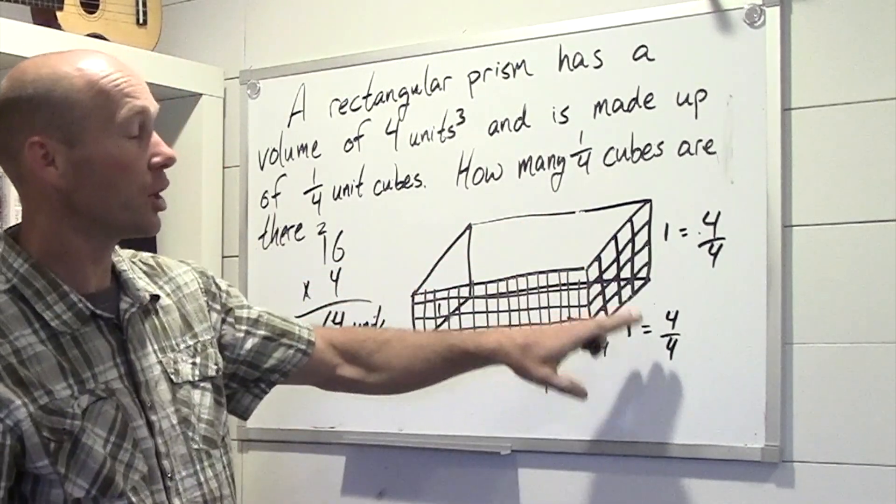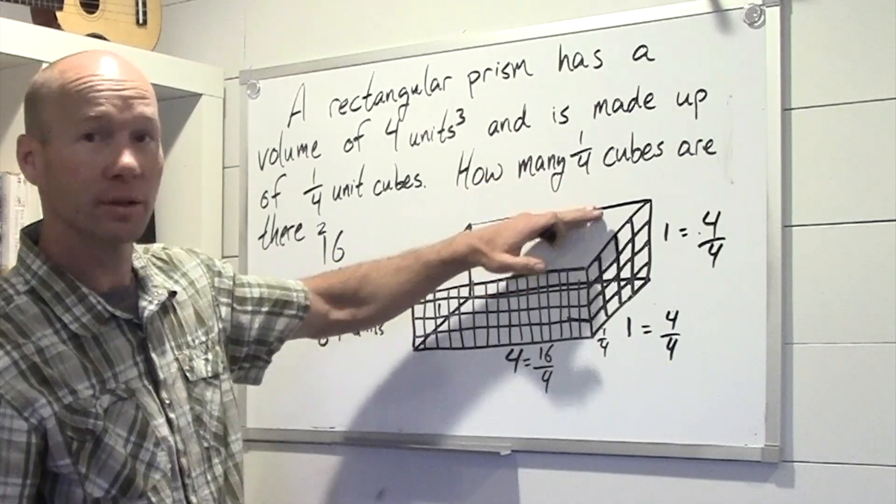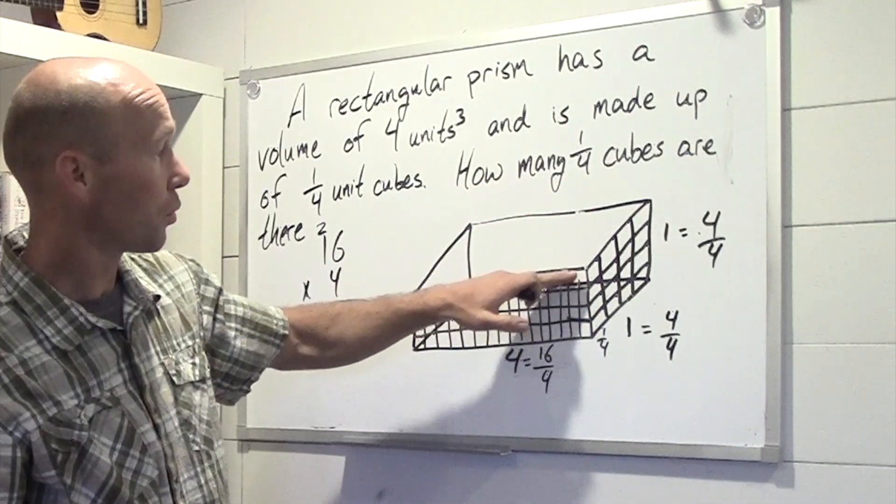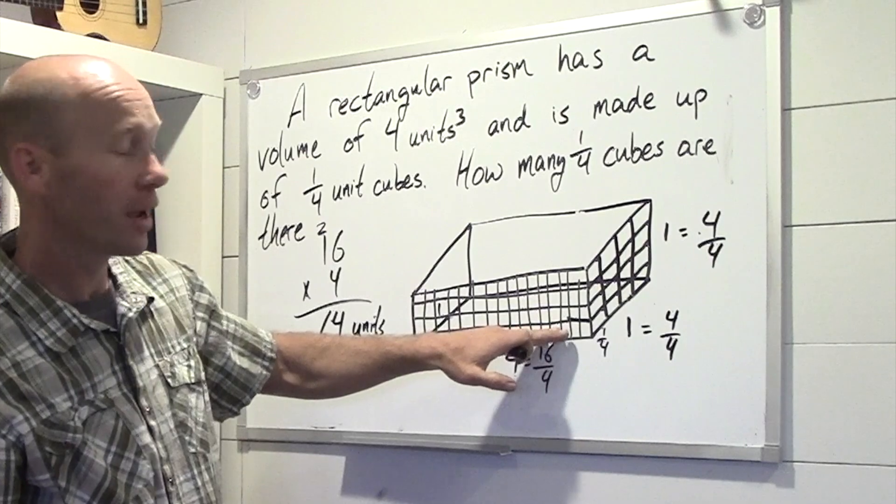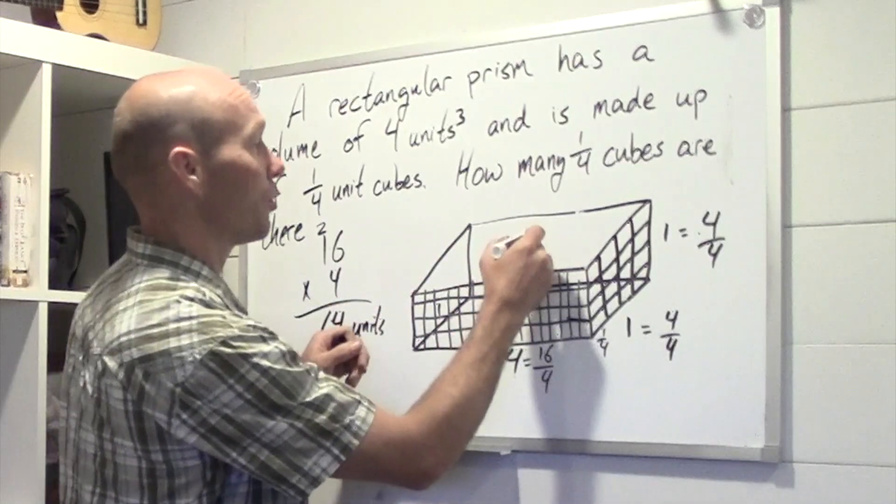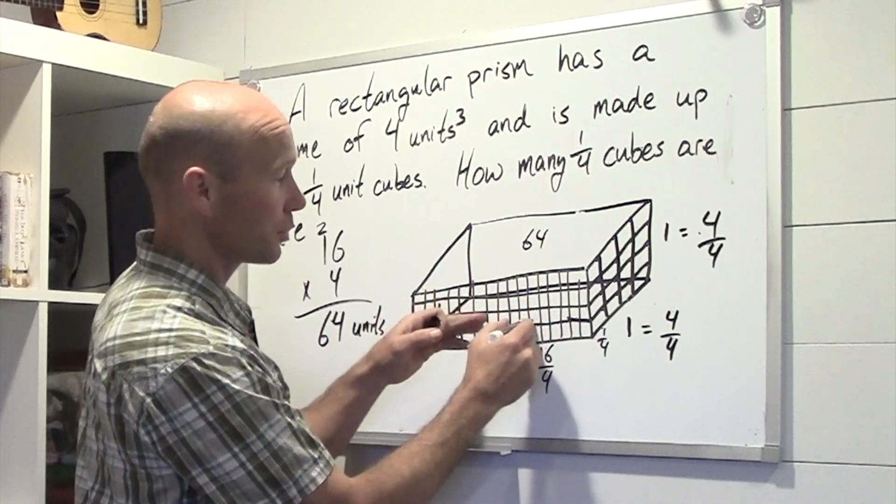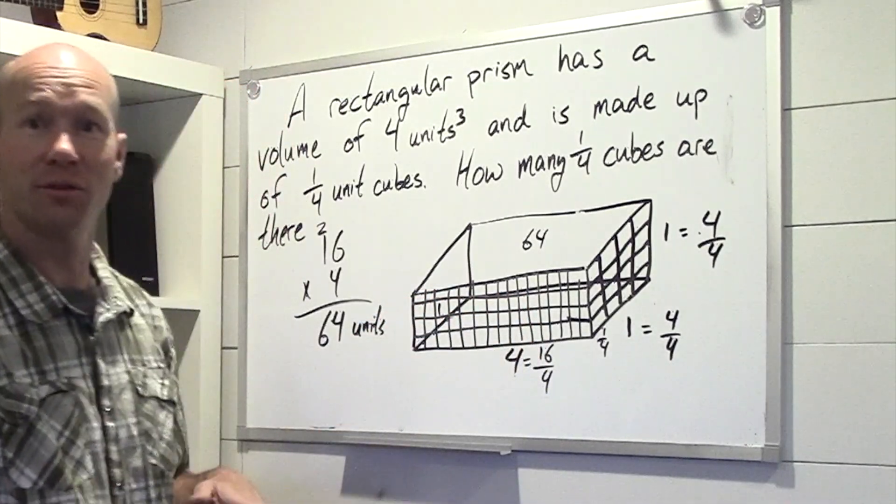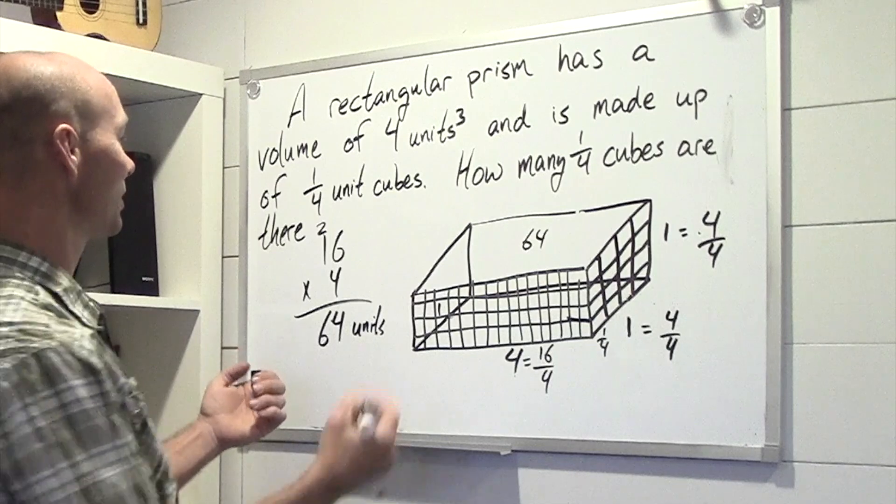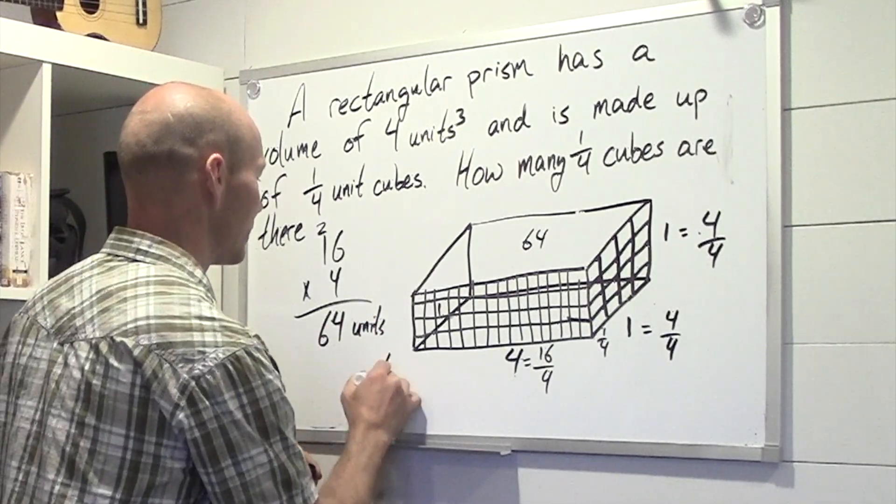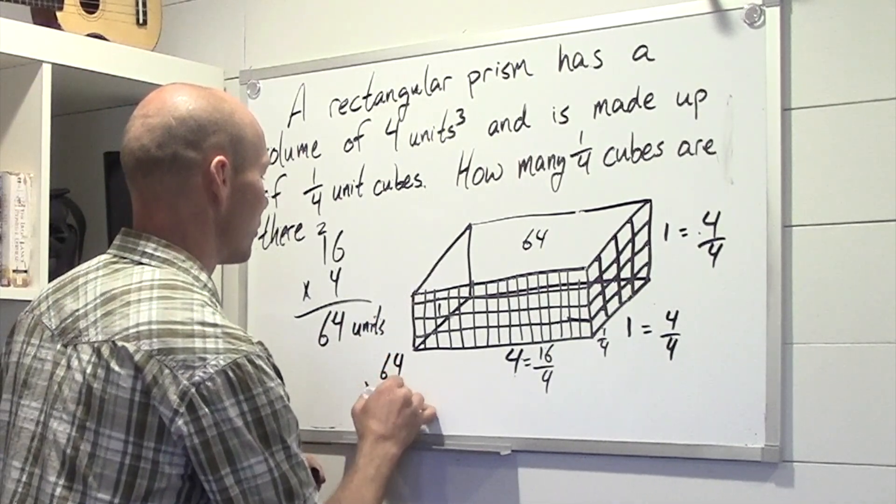Well, how many rows are there in total? 1, 2, 3, and 4. So we have 64 at the top, plus 64, plus 64, plus 64. And how do we do that a little easier? We say 64 times 4.